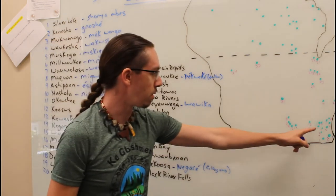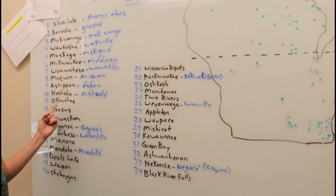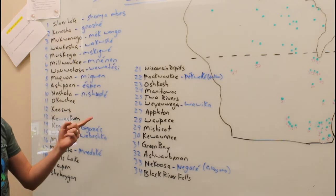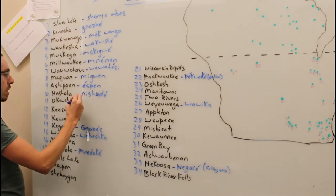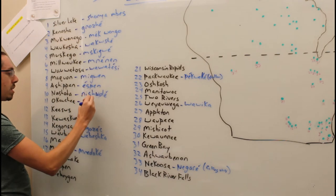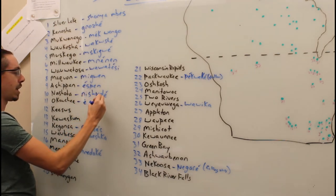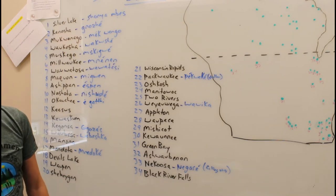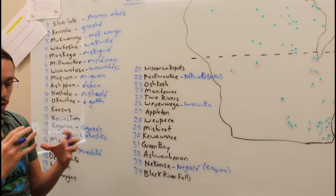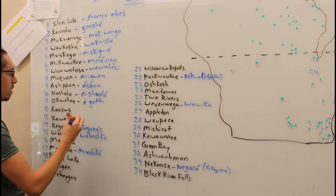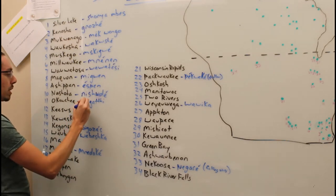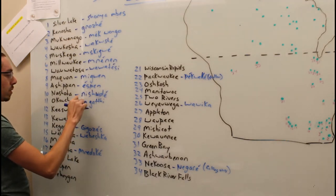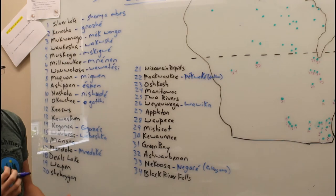Number 11, south of the river, is Okauchee, Wisconsin. That comes from our word Ogachi, and Ogachi means something small.